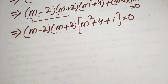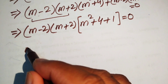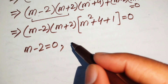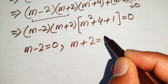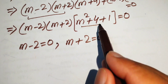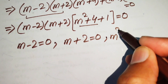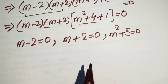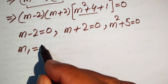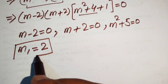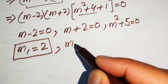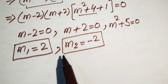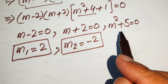We convert this equation into three cases. The first case: m minus 2 equals 0. The second case: m plus 2 equals 0. The third case: m squared plus 5 equals 0. From the first case we easily get the first root m₁ equals 2, from the second case the second root m₂ equals minus 2, and we need to find the other two roots from the third case.